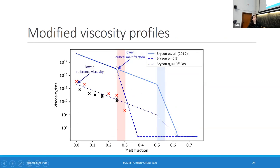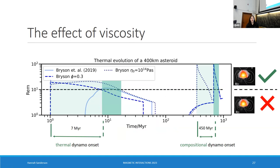So what I did was take three different viscosity profiles: our original profile from James' 2019 paper; one profile with a lower critical melt fraction in line with the experimental region; and one model with a lower reference viscosity of 10^14, but with the critical melt fraction left as it was. In each model I changed one thing to try and get closer to observations. Both of the new modified models had a dynamo onset seven million years earlier than the published viscosity model. And changing the reference viscosity to 10^14 led to a 450 million year difference in compositional dynamo onset, whereas changing the critical melt fraction didn't change that much. The plan now is to run a systematic sweep through critical melt fractions, reference viscosities, and other compositional parameters to figure out how these affect dynamo start time, end time, and duration.